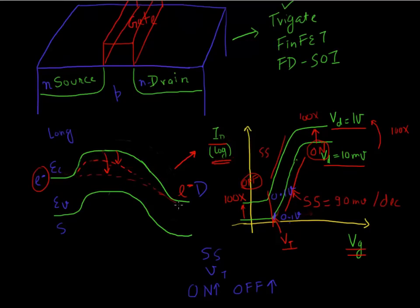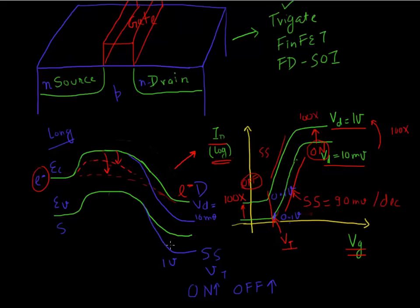Another way to state this is from the energy band diagram for a long channel device: whether you apply a small drain voltage of 10 millivolts or a large drain voltage of 1 volt, you are not modulating the barrier which determines current flow from source to drain. The drain voltage is not modulating this barrier for electron flow.